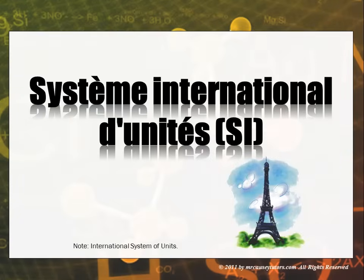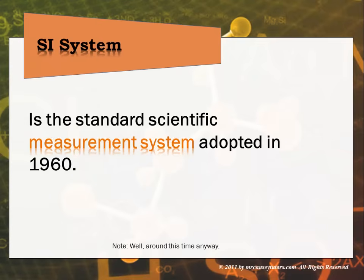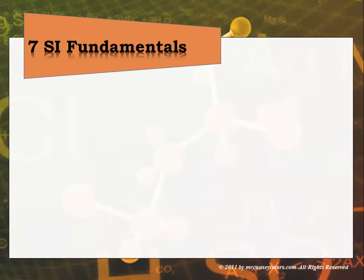The International System of Units (SI) was developed in the 1960s and established seven fundamental units. All other units that come out of the SI system are derived units. Both the derived units and the fundamental units are still part of the metric system.